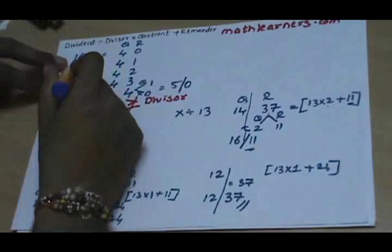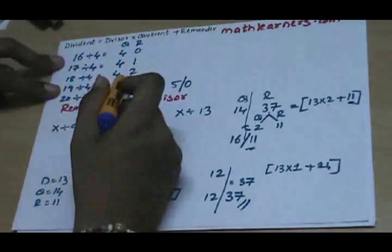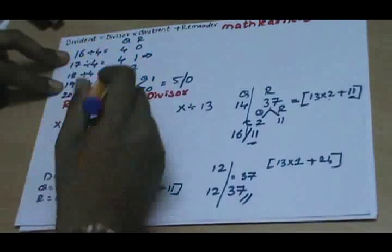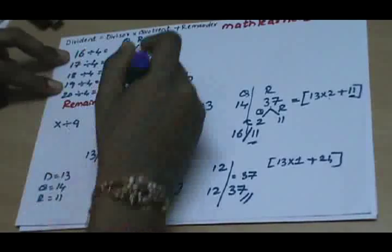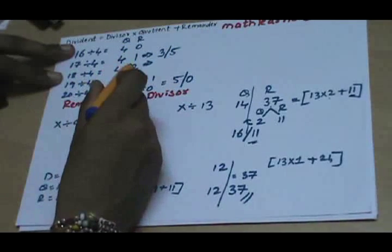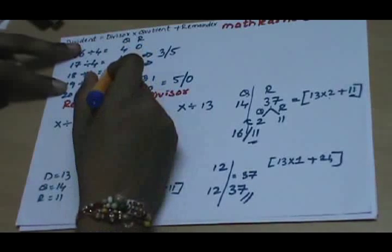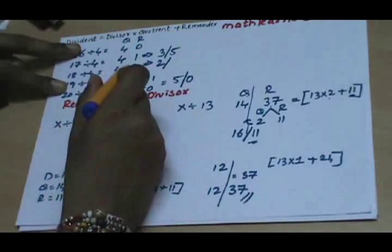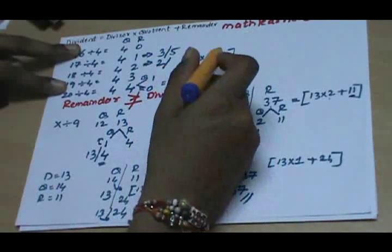Let's say suppose we divided 17 by 4. We know quotient is 4 and remainder is 1. For calculation purposes, suppose we need the remainder to be greater than 1. We take 1 from the quotient, leaving quotient as 3, and 1 unit of 4 goes to the remainder side, so the remainder becomes 4 + 1 = 5. For 18 divided by 4, we got quotient as 4 and remainder as 2, and we want remainder to be greater than 8. We take 2 fours from the quotient, leaving quotient as 2, and the new remainder becomes 4 × 2 + 2 = 10.